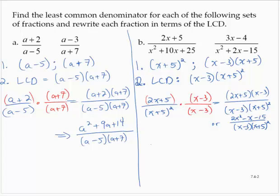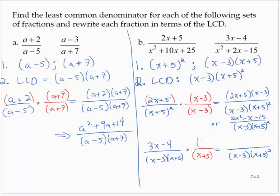Similarly, with the second fraction, I have (3x - 4) over (x - 3)(x + 5). In the end, I need a denominator of (x - 3)(x + 5)², so the denominator is missing a factor of (x + 5). Multiplying the numerator by (x + 5) as well gives (3x - 4)(x + 5), or 3x² + 11x - 20, over (x - 3)(x + 5)².